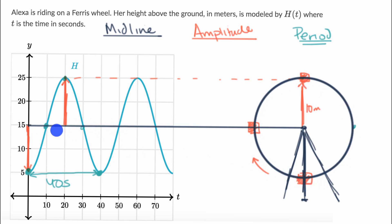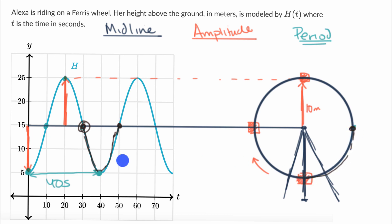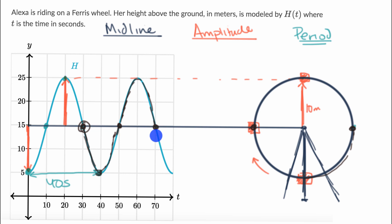We have to be careful when visually inspecting the period. It might be tempting to start at 15 meters above the ground, going down, then see we're going up again, and note we're at 15 meters again after 20 seconds and call that the period. But that is not the case. In order to complete a full cycle, we not only have to get to the same exact height, but we have to be moving in the same direction. At the first point, we're at 15 meters going down; at the second, we're at 15 meters going up. We have to keep going another 20 seconds to be back at 15 meters and going down — making the full period 40 seconds.